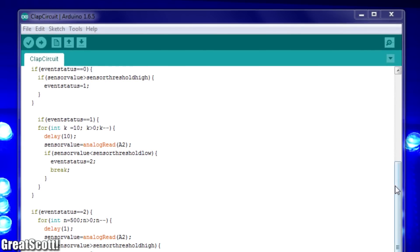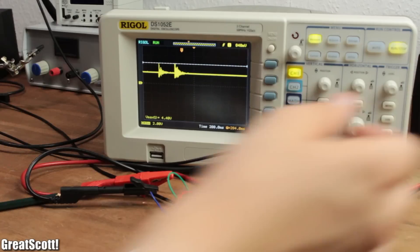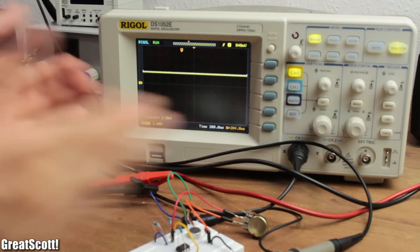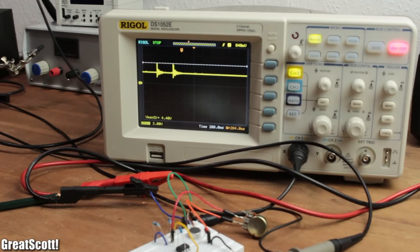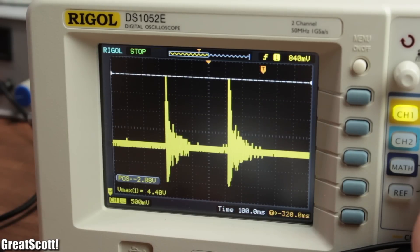Now that we've got our signal to work with, we can get started with the code. In order to only turn things on with claps, we need to determine a pattern we want to work with. I went with two claps with a slight pause in between them.